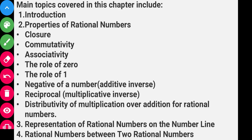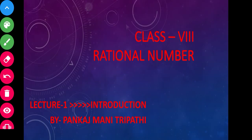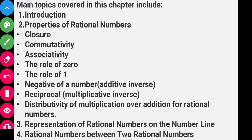The main topics covered in this chapter include: introduction, where we will learn the definition of rational numbers and examples; then properties of rational numbers, including closure property, commutative property, associative property, the rule of zero (additive identity), rule of one (multiplicative identity), negative of a number (additive inverse).